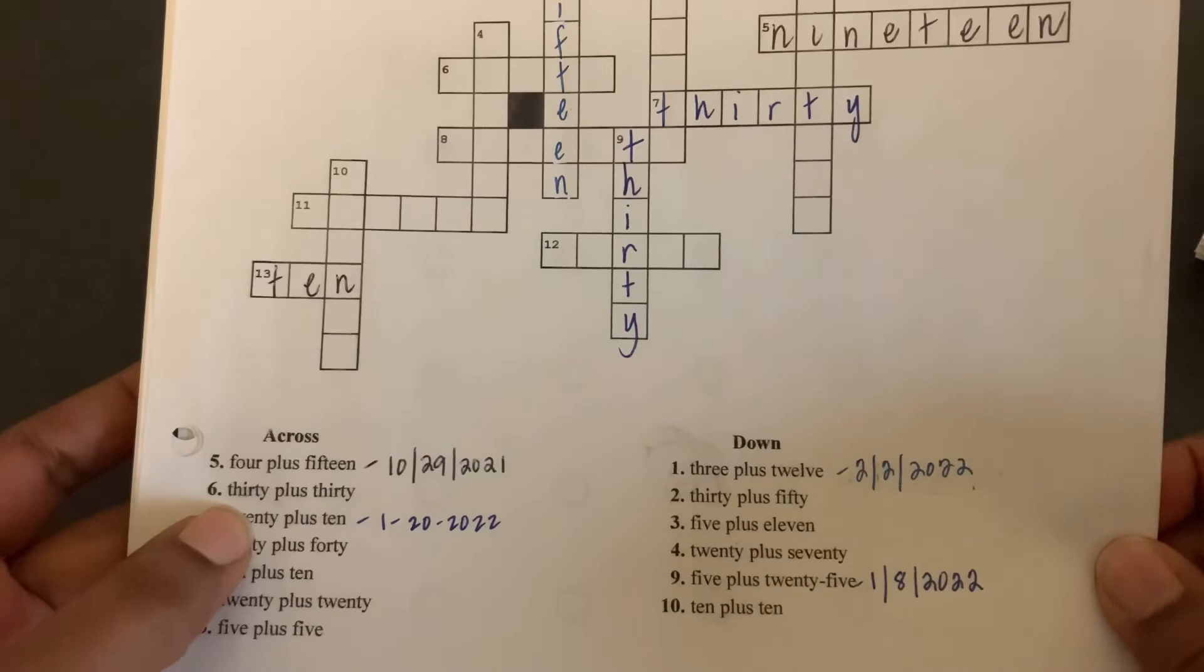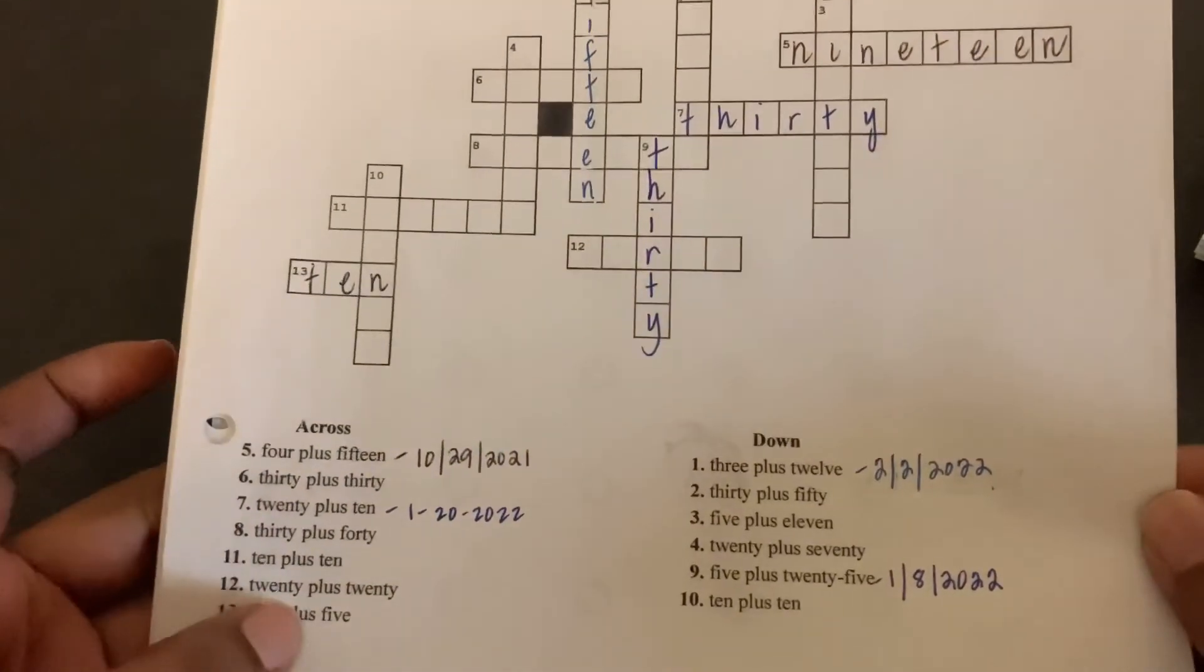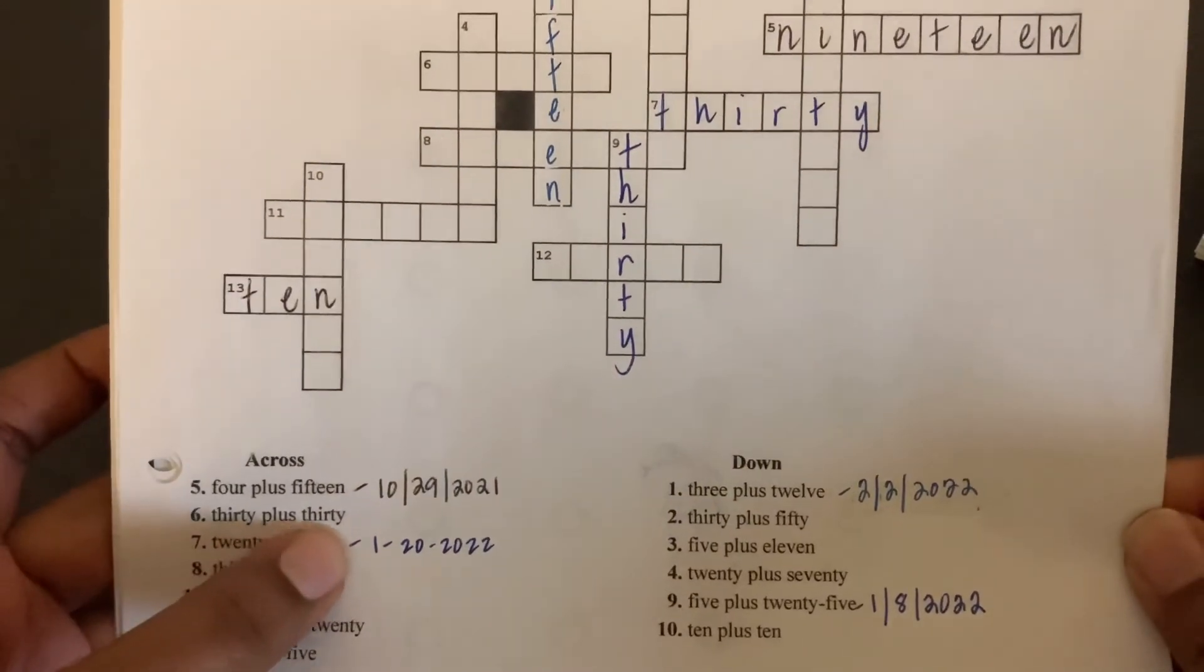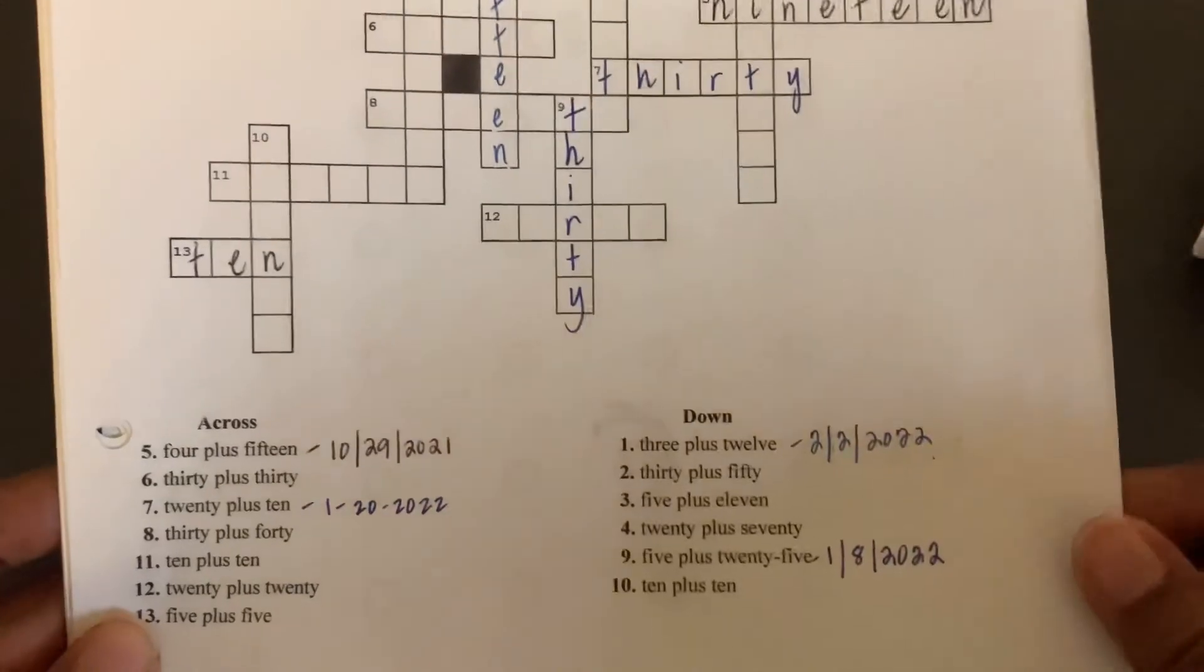Because you can see here I have 30 plus 30, which would be $60, 30 plus 50, which is $80.